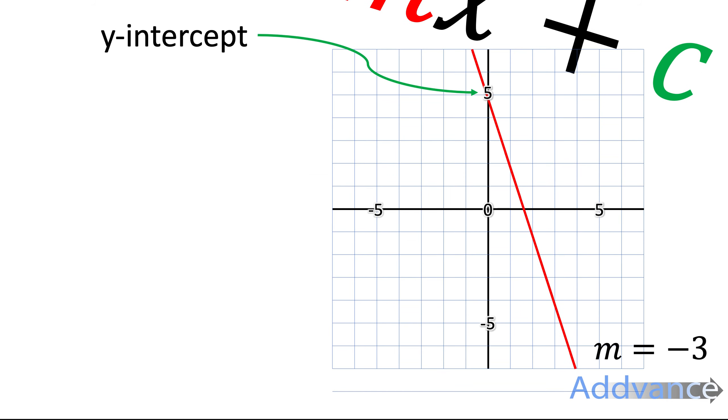Now we can look at the c. What does the plus c do? The plus c tells you the y-intercept. So here, this red line here crosses the y-axis at 5. And so the y-intercept, where it crosses the y-axis, is 5.